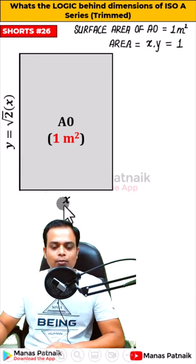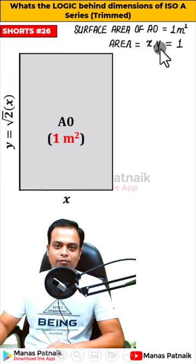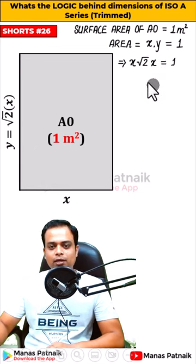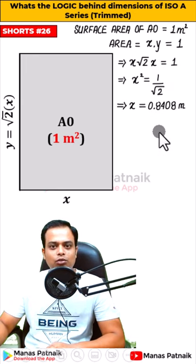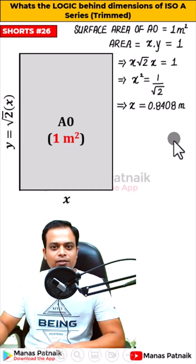Now both of them have been related by using this equation, so y can be replaced by root 2x. Just trying to solve for x, what you get is x equals 0.8408, rounded off to two decimal places.